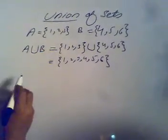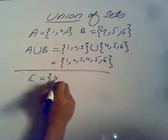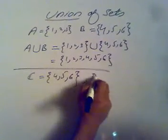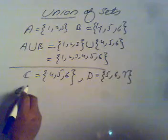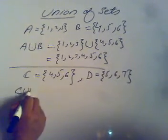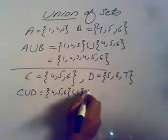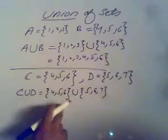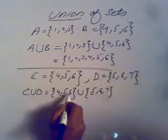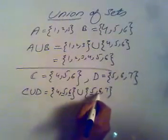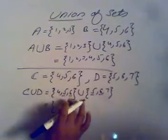Suppose we have different sets. Let C equal {4, 5, 6} and another set D equal {5, 6, 7}. When we calculate C union D, it would be the value of C, then the union symbol, then the value of D: 5, 6, 7. Now if we combine them, there are a few elements which are common — 5 is in C as well as in D, and 6 is also in C as well as in D.